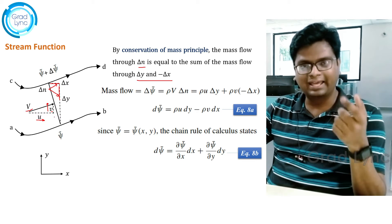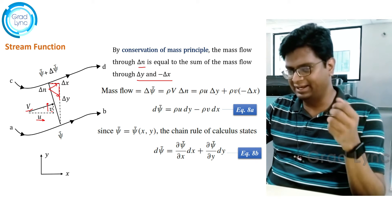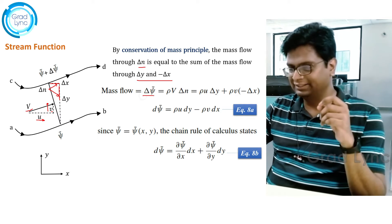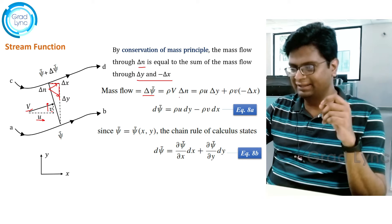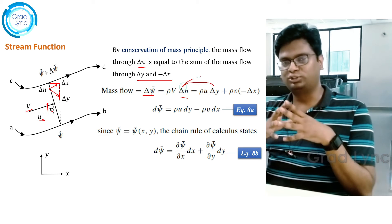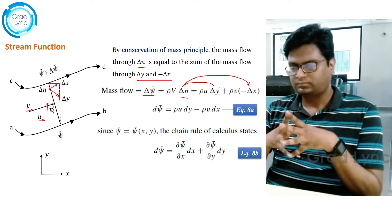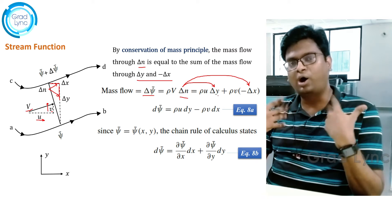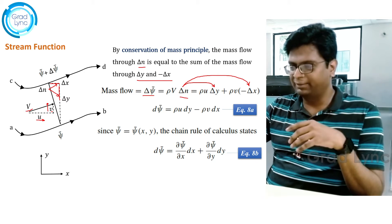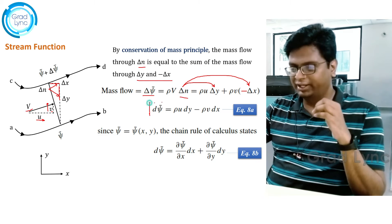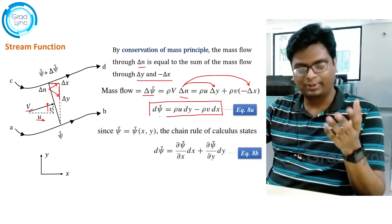The cross-sectional area del-n is replicated as del-x and del-y. Regarding sign convention, mass flow moving into the system is positive and out of the system is negative. So replacing del-n, del-psi-bar becomes rho·u·dy minus rho·v·dx — let's call this equation number 8a.